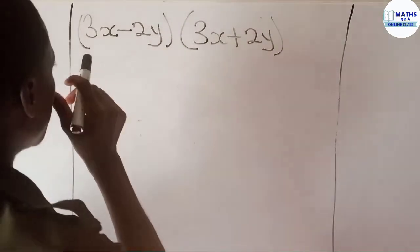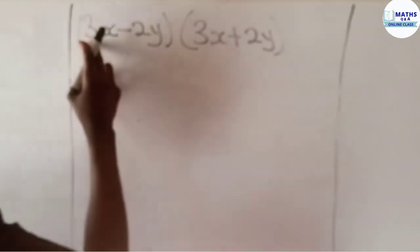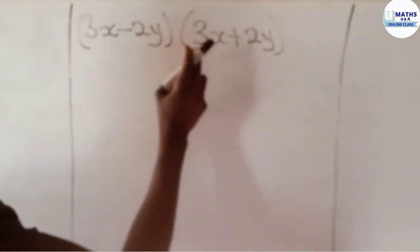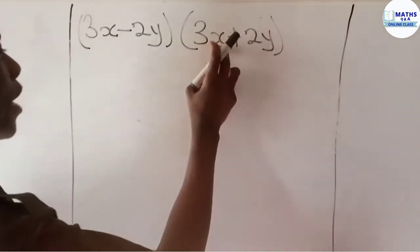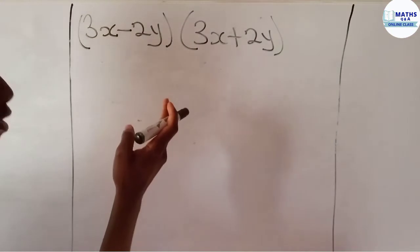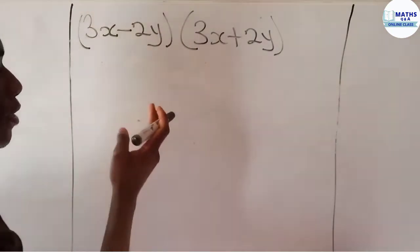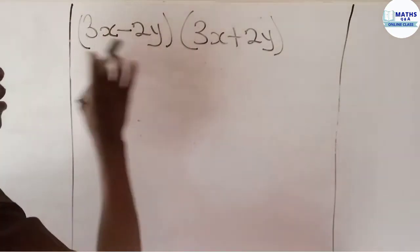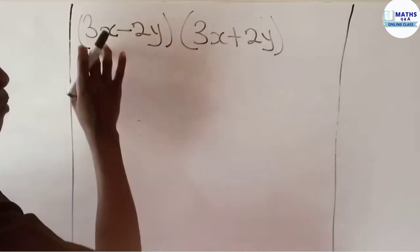We have to expand the question 3x minus 2y multiplied by 3x plus 2y. If you want to solve a question like this, first note that these two terms are in one bracket and these two terms are also in one bracket.